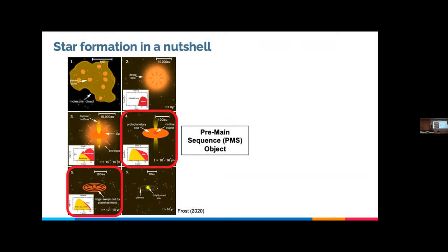I should note that this whole picture applies for low mass star formation. For high mass star formation we don't really know how this picture looks — they kind of skip through the pre-main sequence phase. And of course it assumes singular stars and non-binaries, which makes it more complicated.